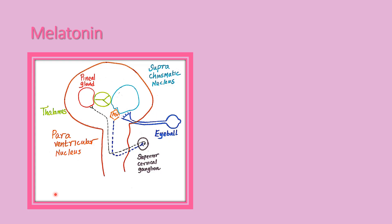Melatonin is produced from the pineal gland. The pineal gland is a small gland, around 4 mm in size. It is located at the posterior end of the corpus callosum.